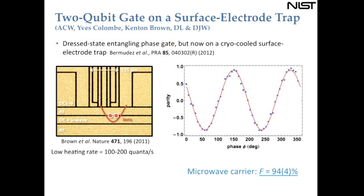As well as doing this gate in a room-temperature setup, we also implemented it on a surface trap. We used a cryogenically cooled trap developed by Kenton Brown, which is a linear Paul trap with RF electrodes, DC electrodes, and a microwave current line. It's a multi-zone trap so ions don't have to be in a single well — in fact I'll show a double-well trap experiment soon.